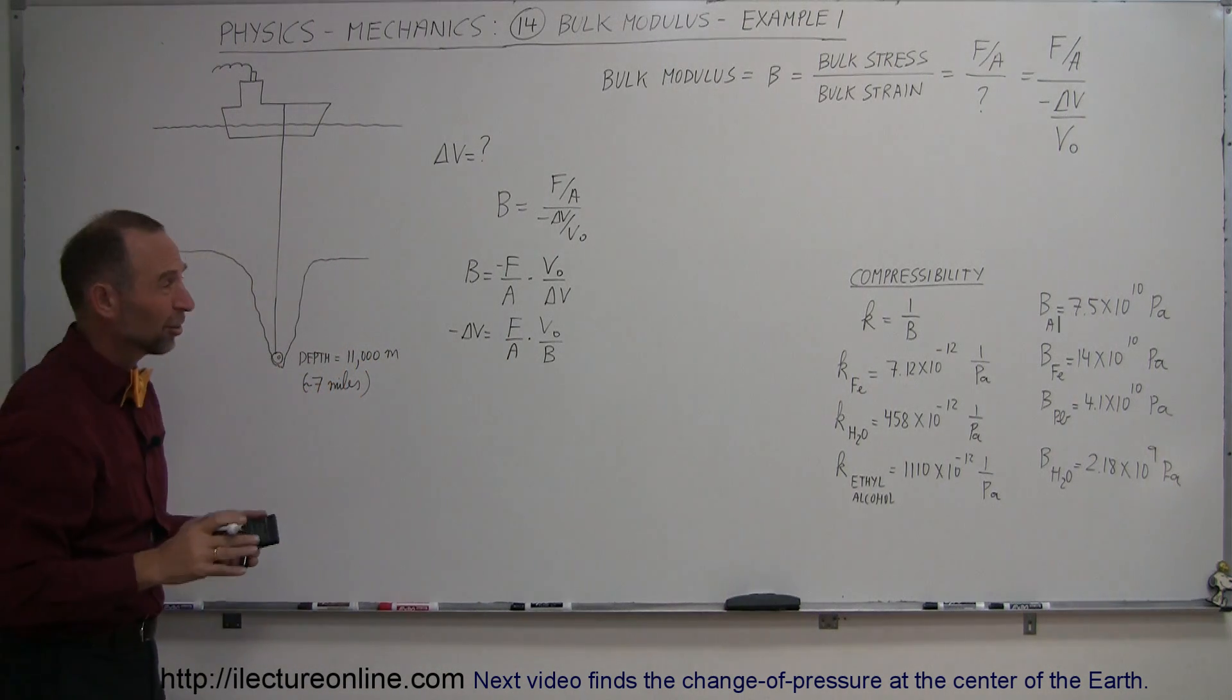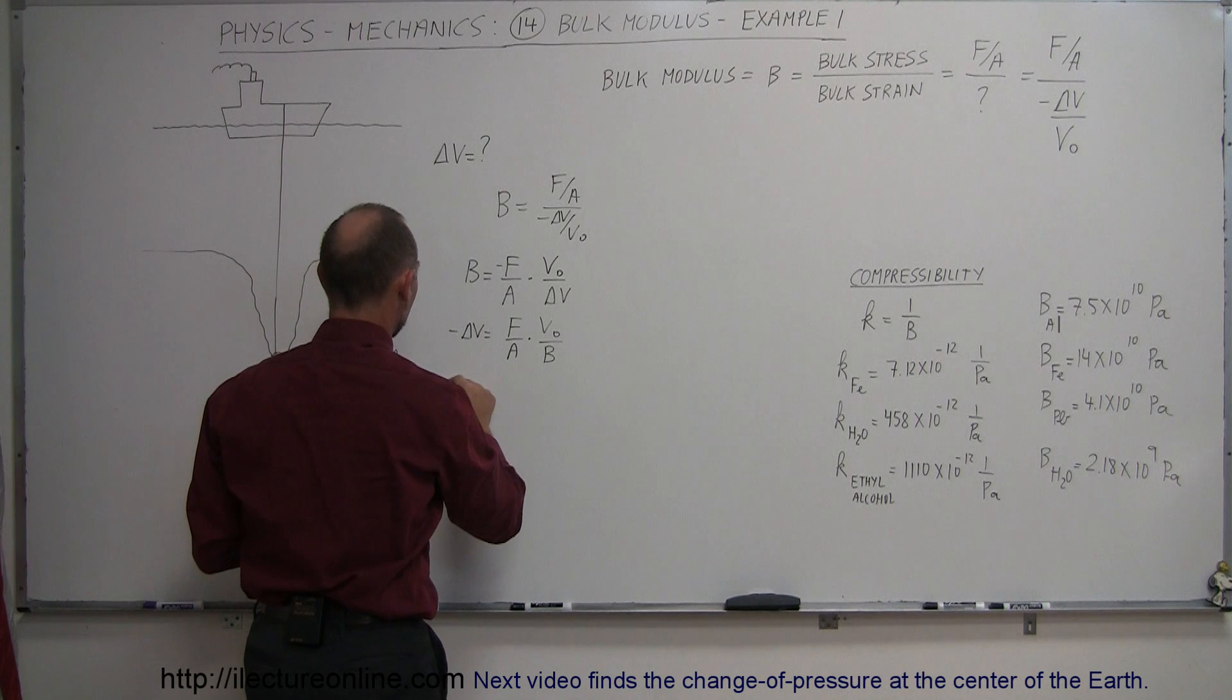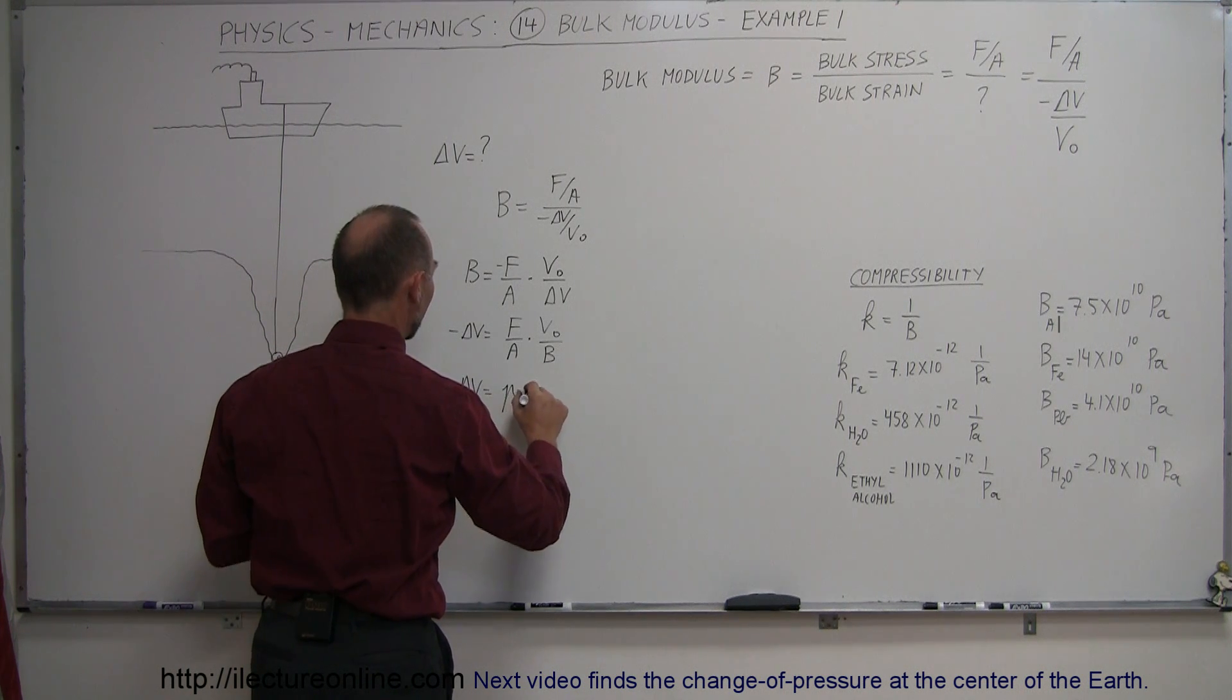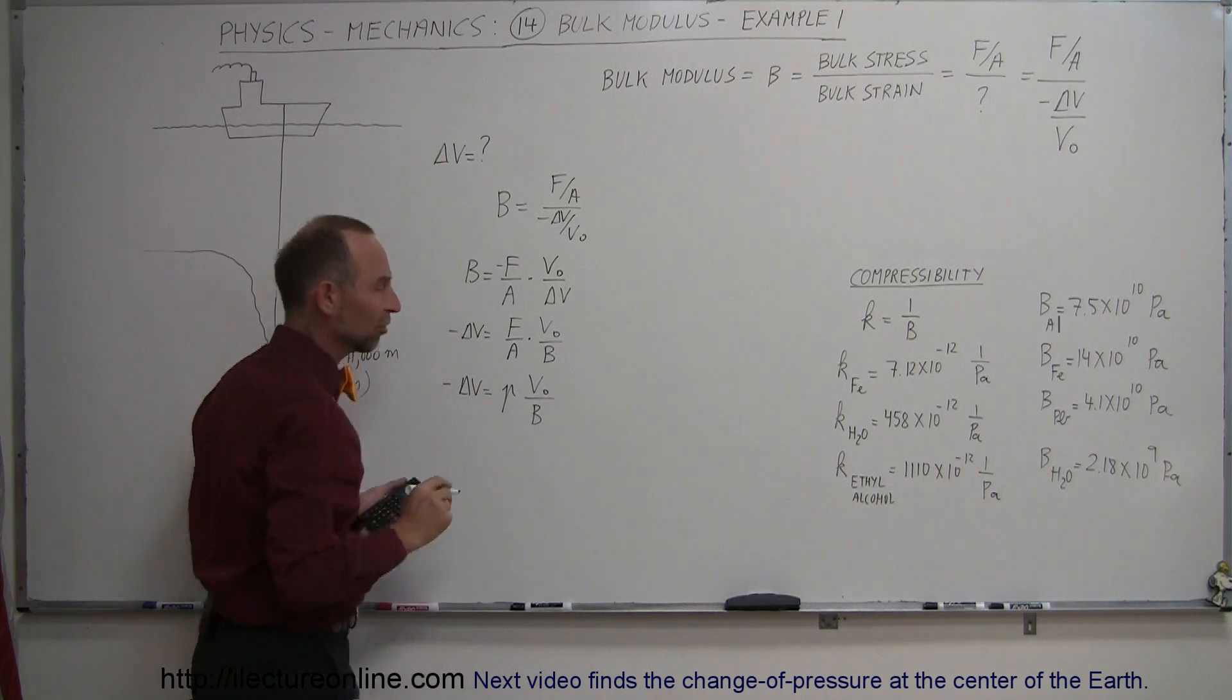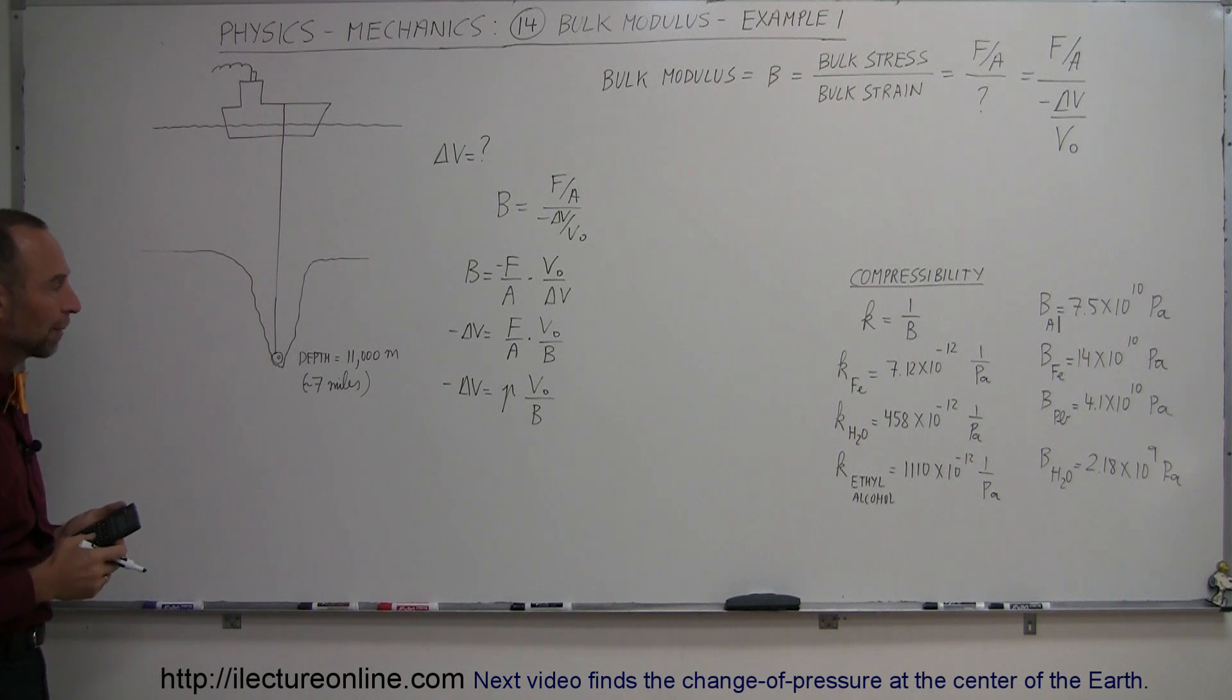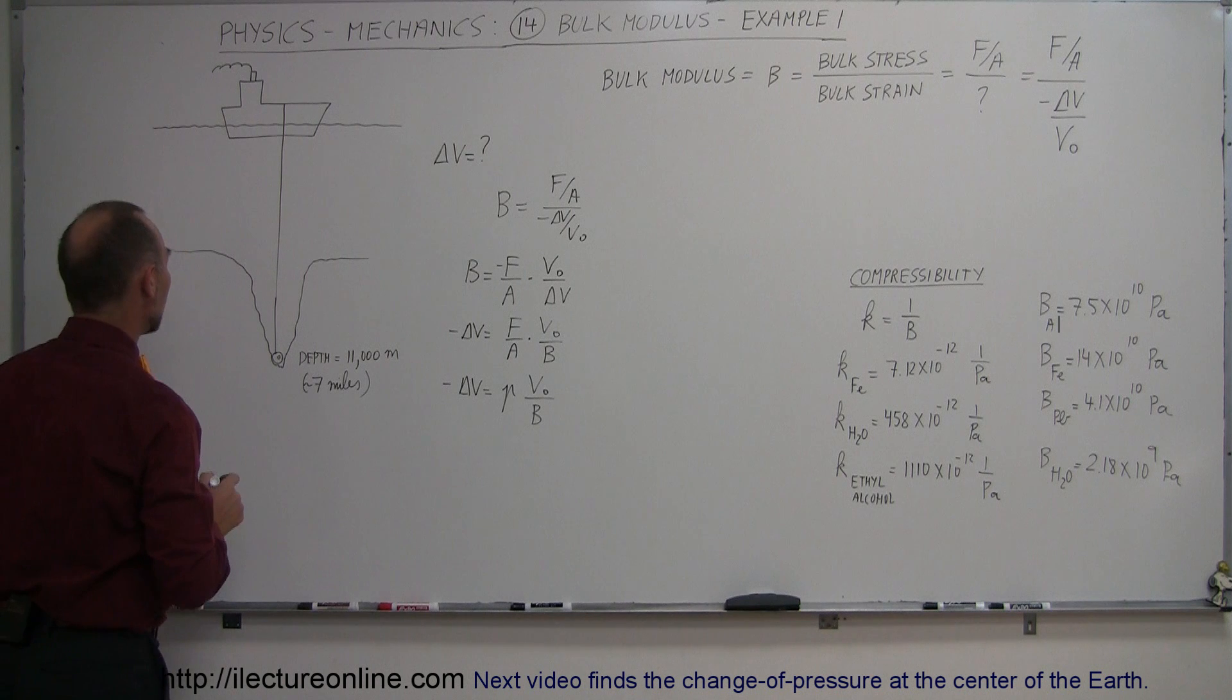And, of course, the force per unit area, since we're talking about going down into a liquid, we could talk about the pressure. We could say the change in the volume is equal to the pressure at that depth times the original volume divided by the bulk modulus. So, for the original volume, we're just going to take a cubic meter of water. So, what is the pressure at this great depth in the oceans?